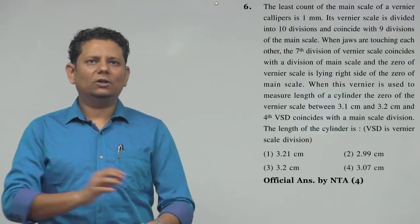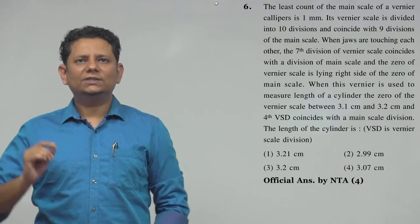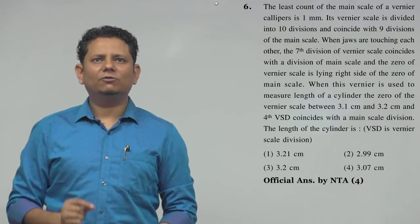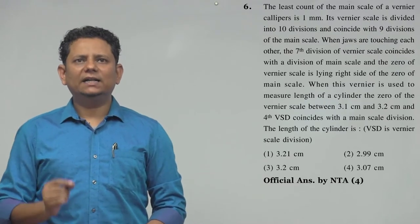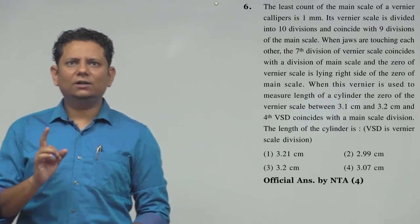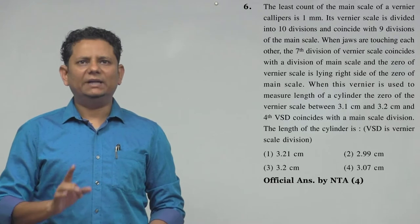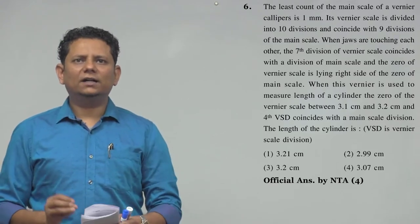Next question. The question says the least count of the main scale of a vernier caliper is 1 mm. Its vernier scale is divided into 10 divisions and coincides with 9 divisions of the main scale when jaws are touching each other.